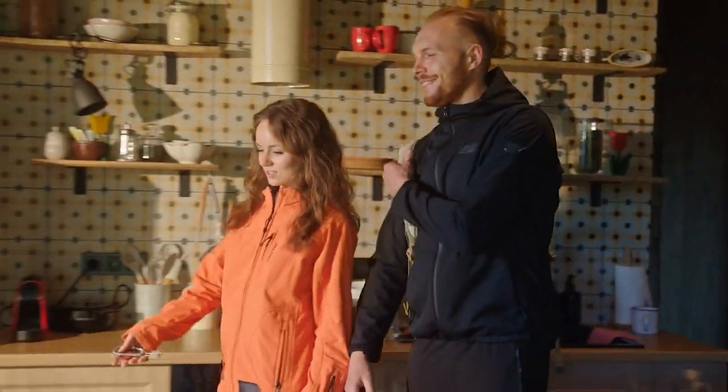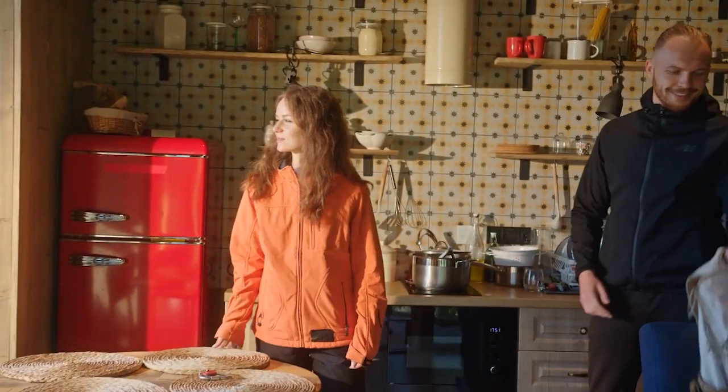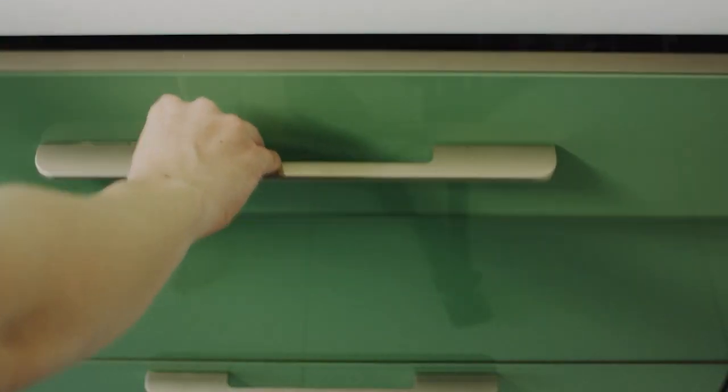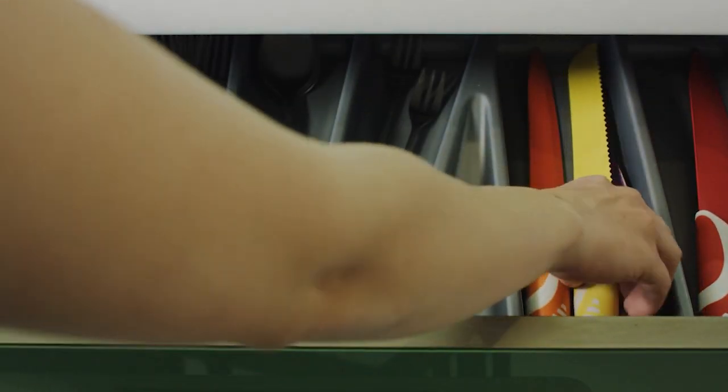Now, let's rewind and imagine the same scenario, but with labeled cabinets. As Jane and Mike entered the kitchen, they'd spot the clear labels on each cabinet, guiding them to plates, glasses and utensils effortlessly. They'd exchange smiles, feeling relieved that their host had thoughtfully organized their kitchen. Their vacation started on a much more positive note.